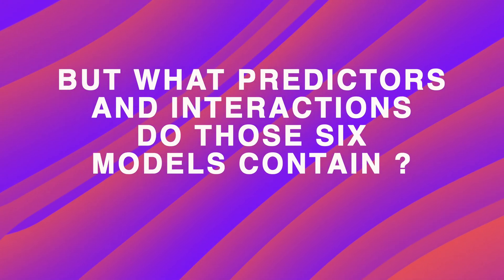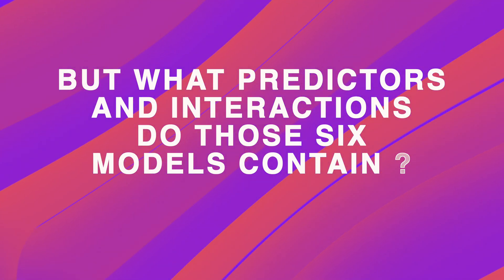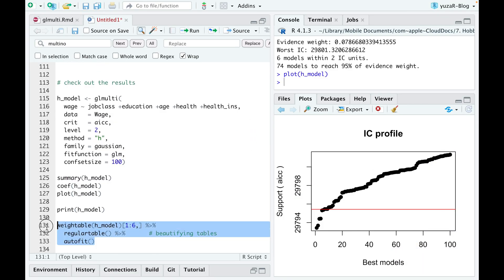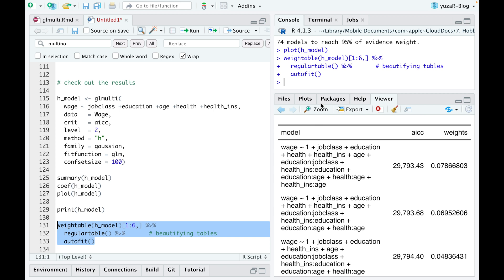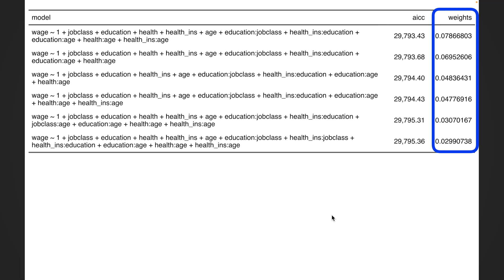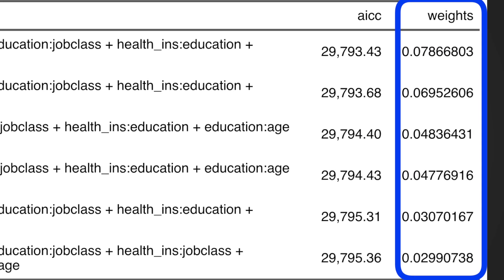But what predictors and interactions do those six models contain? Using weightable function, we can easily display them. Here we see the formulas, information criteria, and the weights of our six best models. The weight of a particular model shows the probability that the model is the best model out of all models considered.